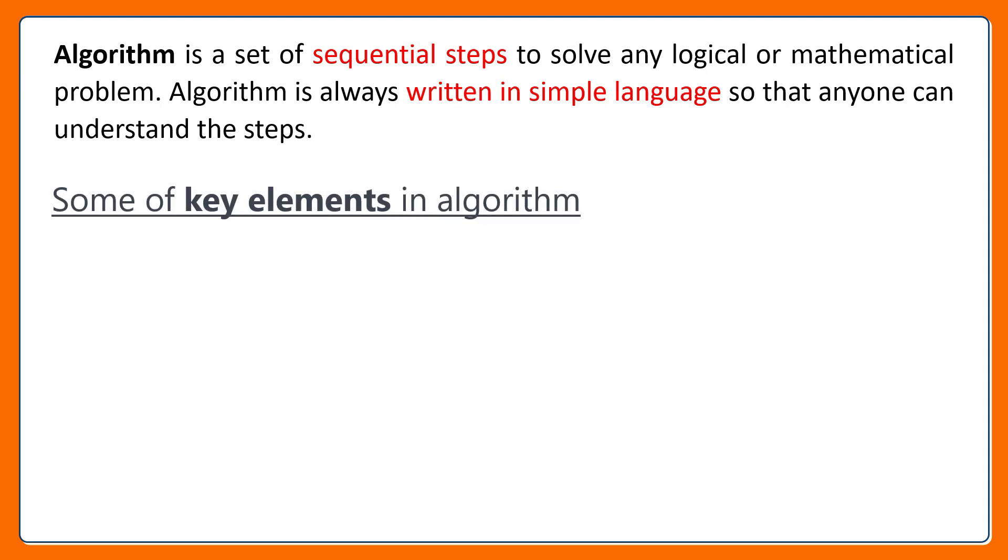Let us learn some of key elements in algorithm. Input: Algorithms take input data as their starting point. This input data is processed through a series of steps. Based on the input and the sequence of operations it performs, finally, algorithm produces a result which is output. So the key elements are input, steps and output.